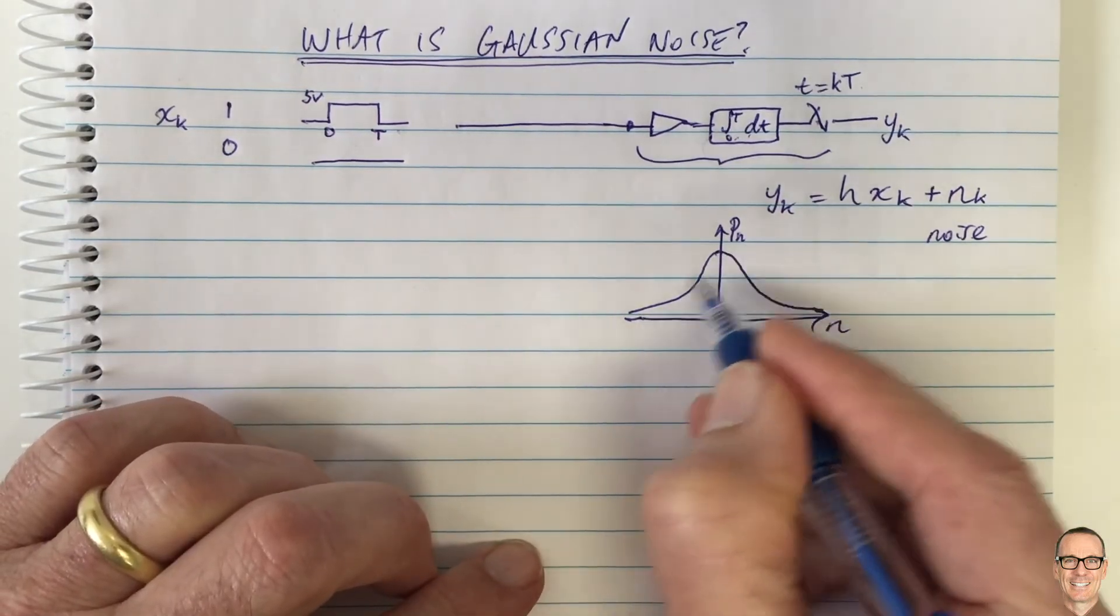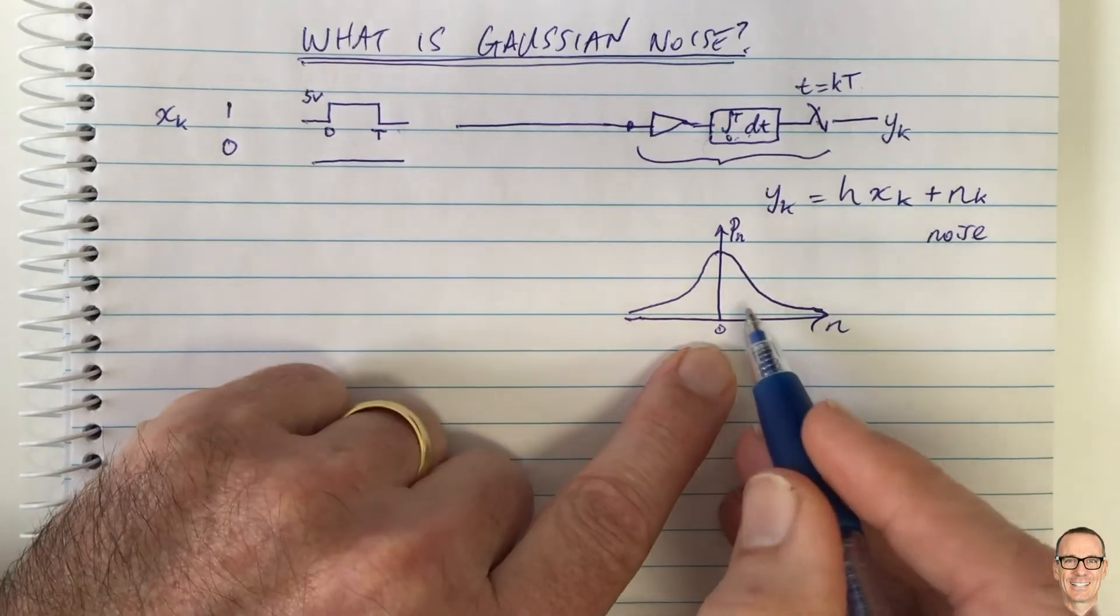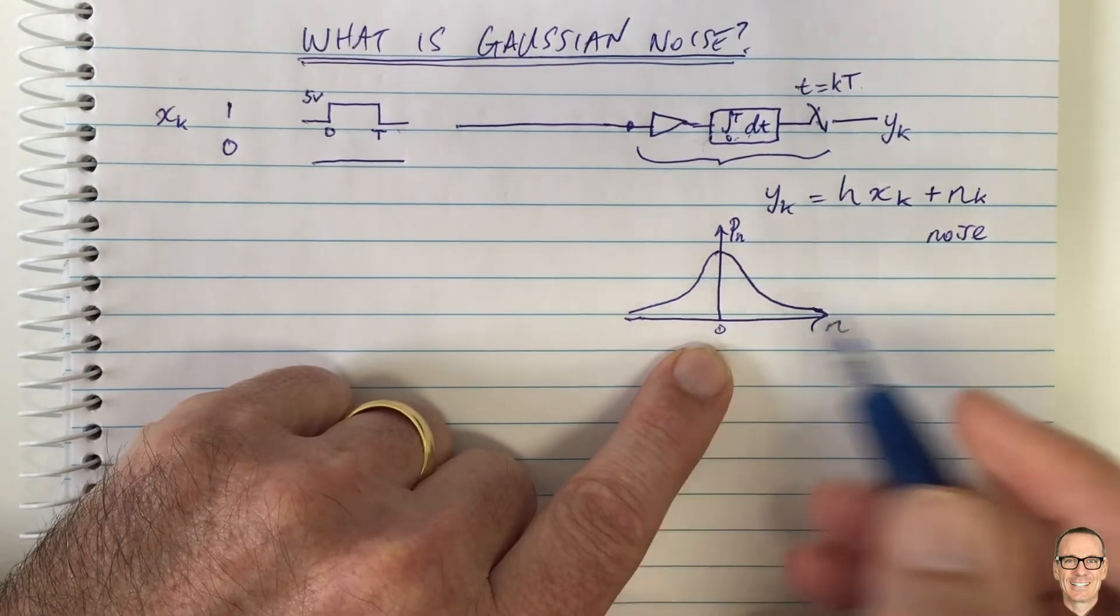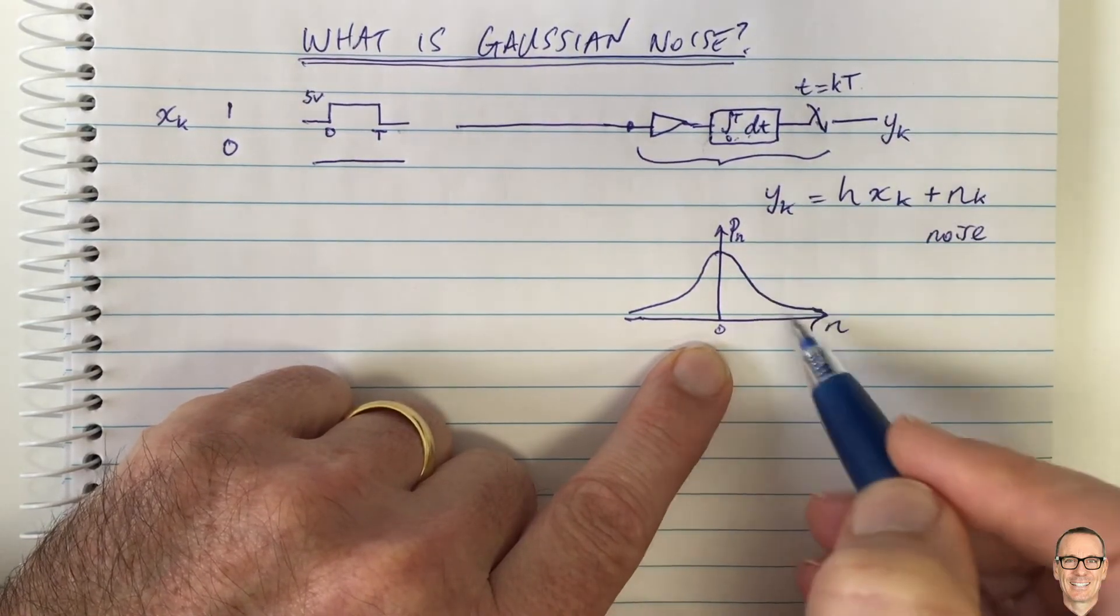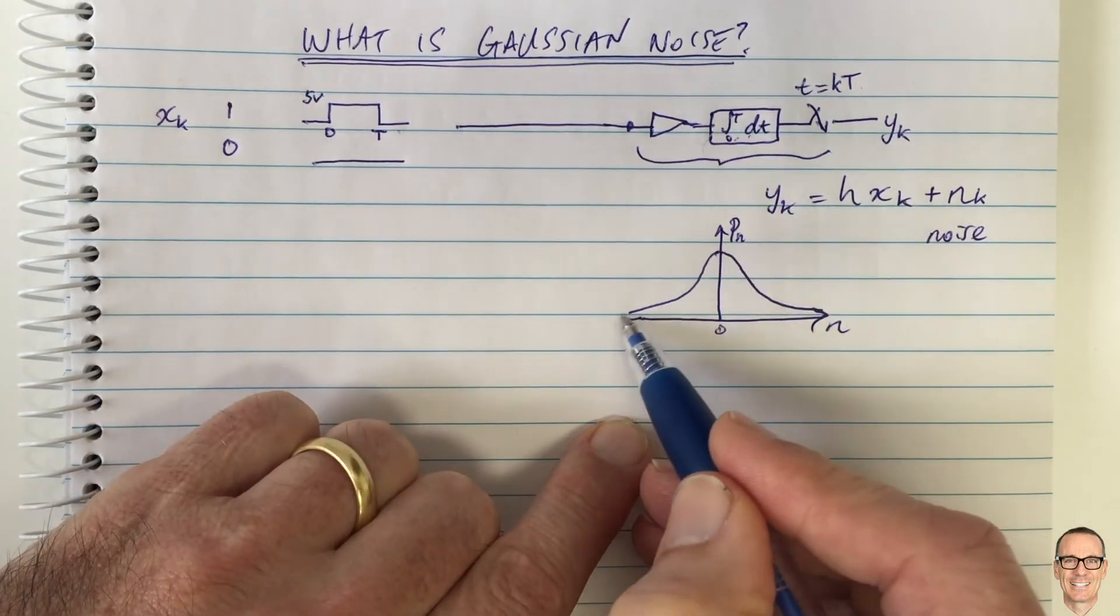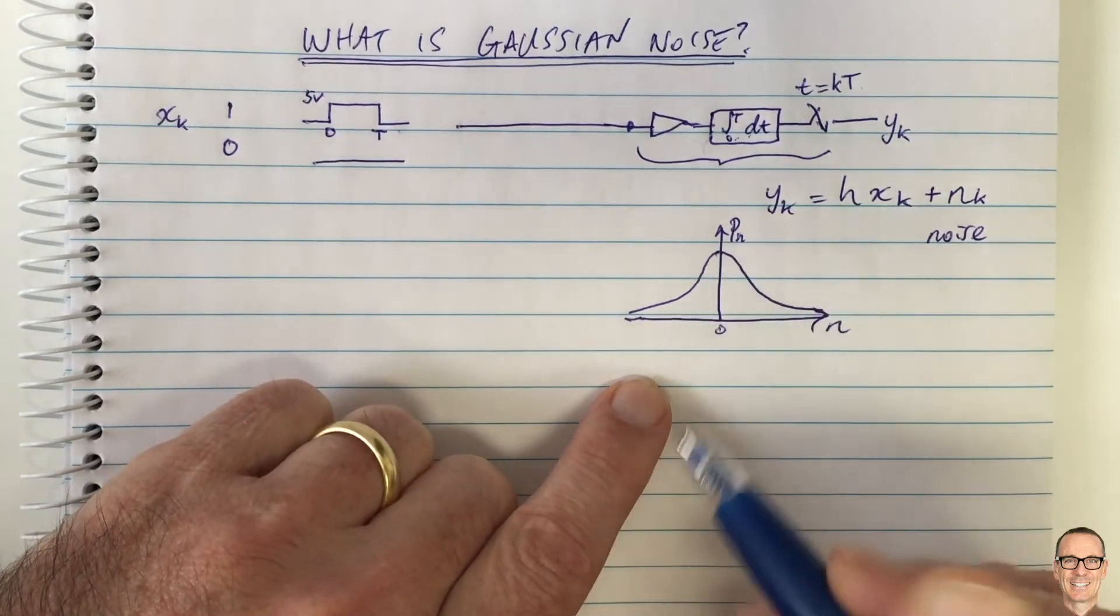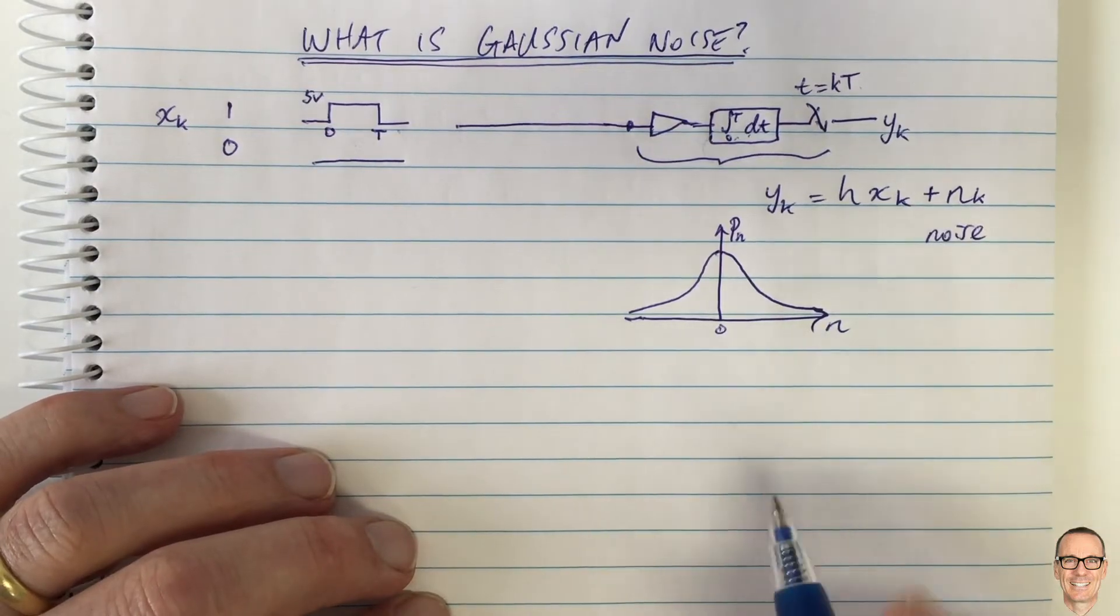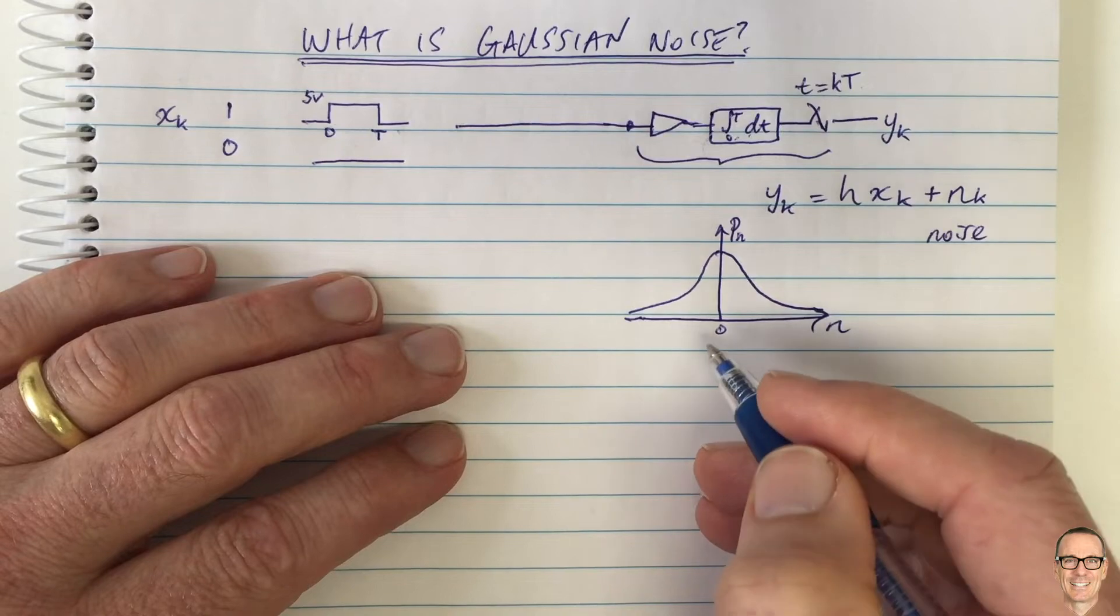So this could make the signal be received above or below because of the effect of the electrons. And this shape here, the actual shape, is the Gaussian curve from the mathematician Gauss who developed this curve. And it turns out if you do measure this signal here and then plot a histogram of it and do many, many measurements and make that histogram very much filled in, then it will follow this Gaussian curve. And so this is why you have Gaussian noise in communication systems, and that's what Gaussian noise means.